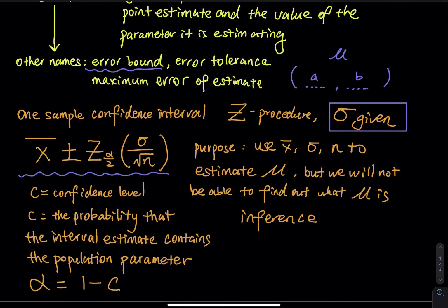So in the formula, the C, the little case C, represents confidence level. The confidence level is the probability that the interval estimate contains the population parameter — the mu. The alpha is a Greek letter alpha, and alpha equals 1 minus C, which explains the confidence level. Regarding the Z alpha divided by 2, I will show you how to find the Z on the next page. You can pick up X bar, sigma, and N directly from the problem.